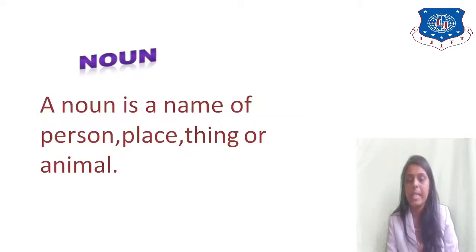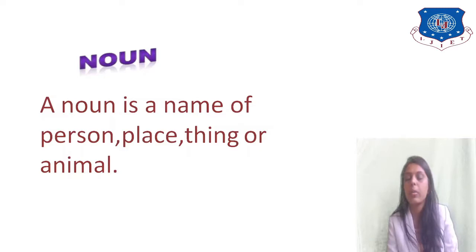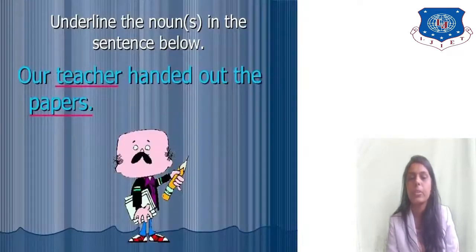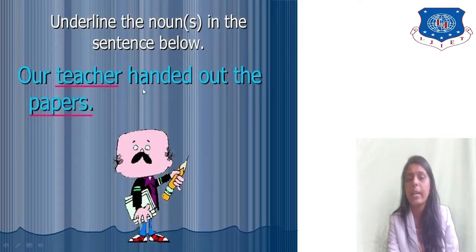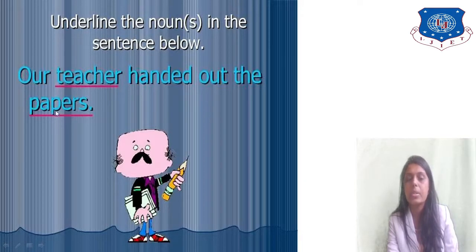A noun is a name of a person, place, thing, or anything. Suppose I write 'she' — that is my name, so that is a noun. If I say that I am going to Delhi, then Delhi is the noun because it is the name of the place. Now underline the nouns in the sentence: 'A teacher handed out the papers.' Teacher is the name of a person, and paper is a thing — so both are nouns.